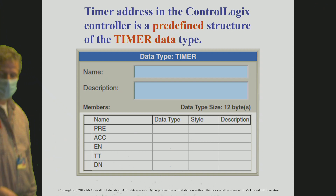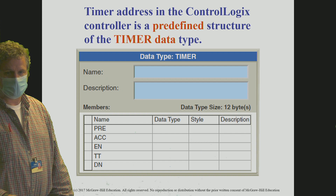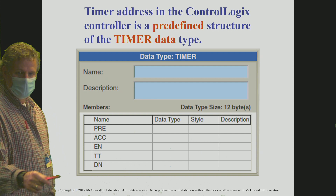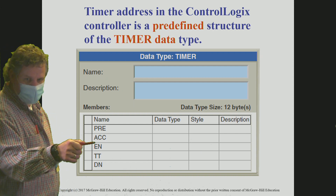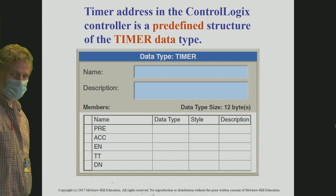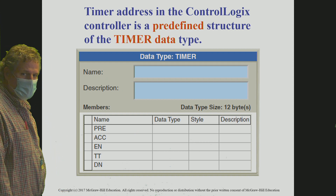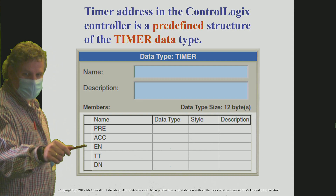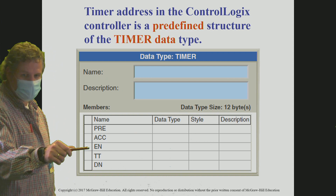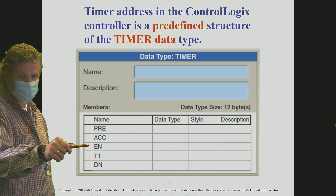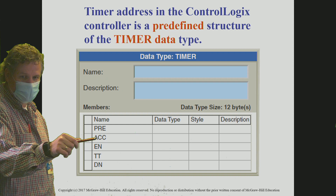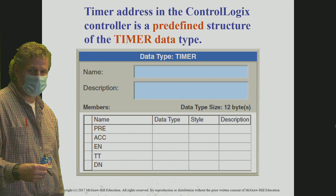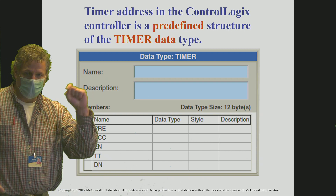Keep in mind when we are talking about words and bits: the preset and accumulated are words, meaning they are 32 bits long. When we're talking bits, we're talking individual bits — one piece of a word, so it's one bit of a word. EN, TT, and DN are nothing more than one single bit each.